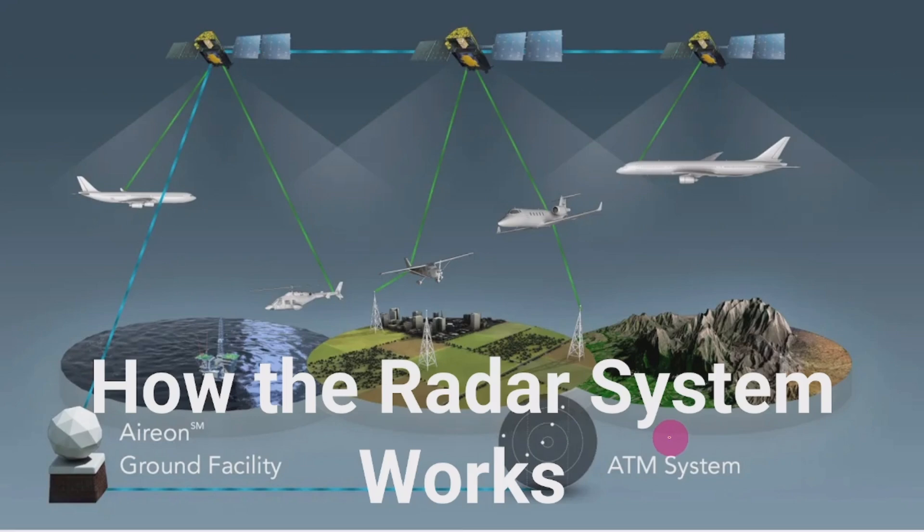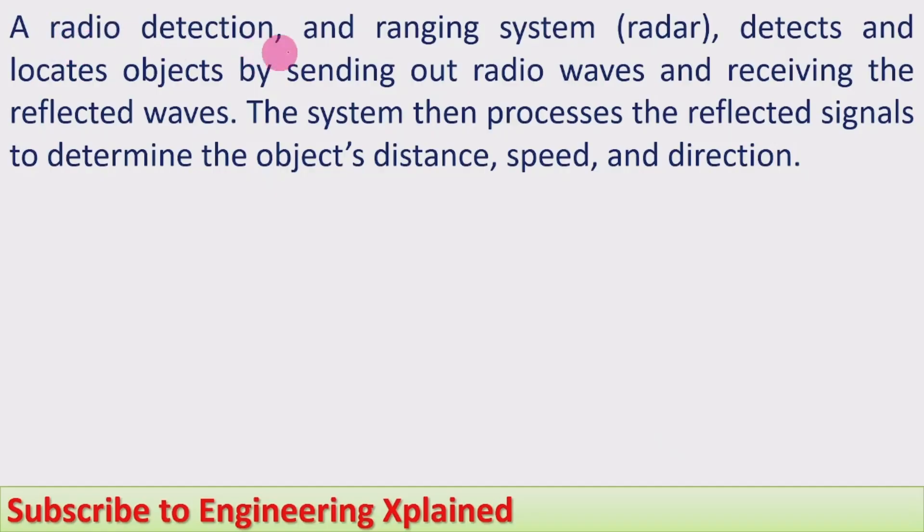A radio detection and ranging system - that is radar - detects and locates objects by sending out radio waves and receiving reflected waves. The system then processes the reflected signals to determine the object's distance, speed, and direction.